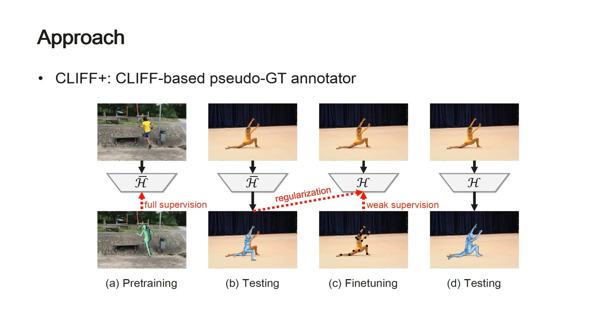Besides, we propose a pseudo-ground truth annotator based on CLIFF. There are four steps in our pipeline. First, we pre-train the CLIFF annotator on several datasets with ground truth SMPL parameters.